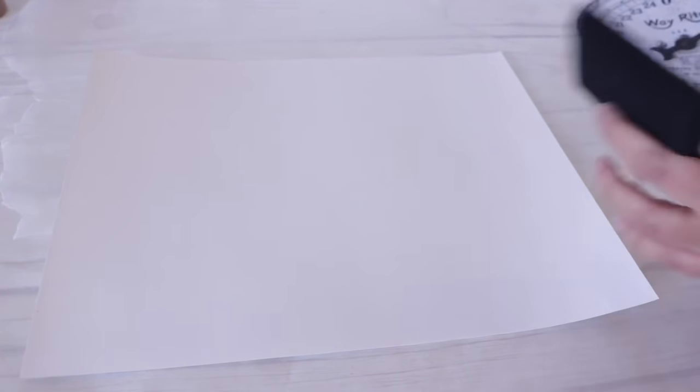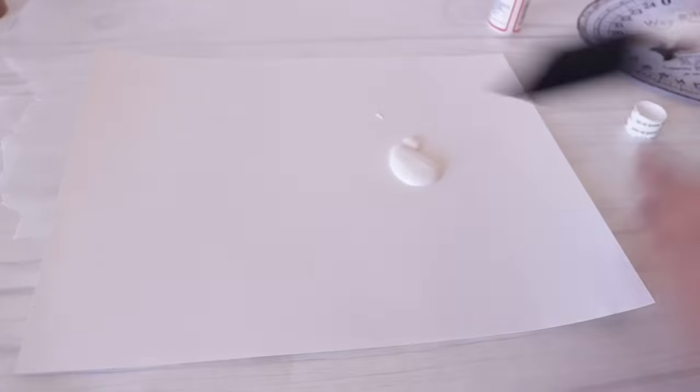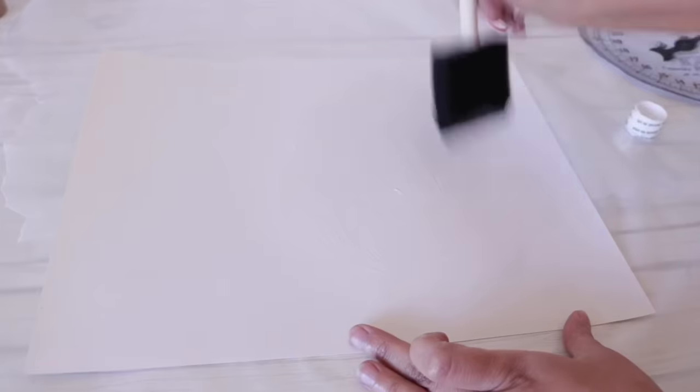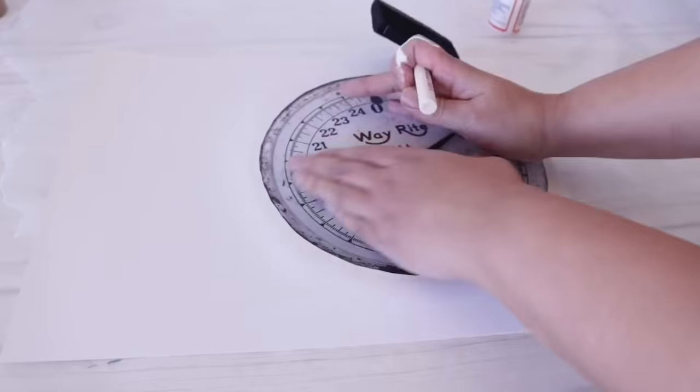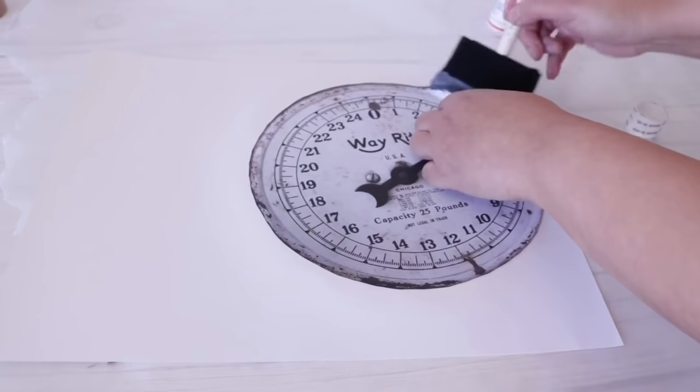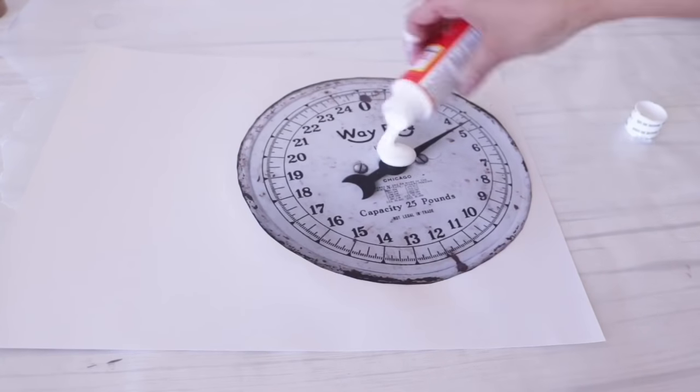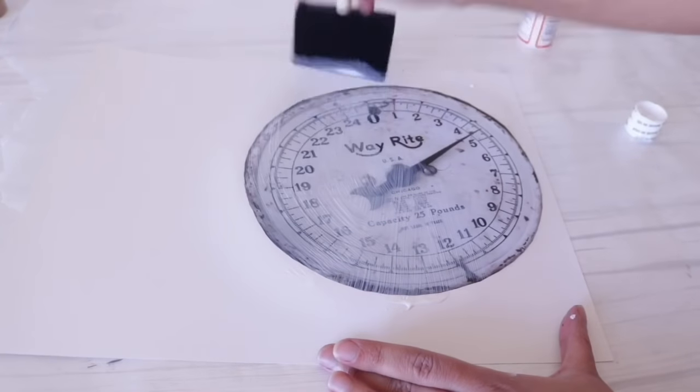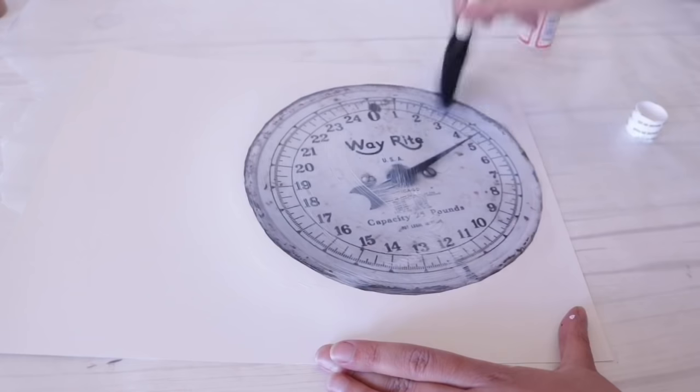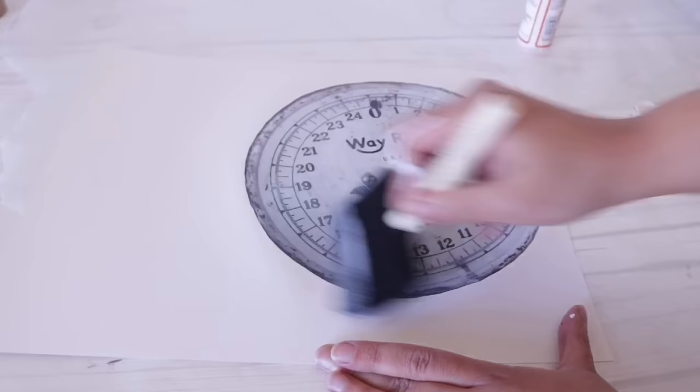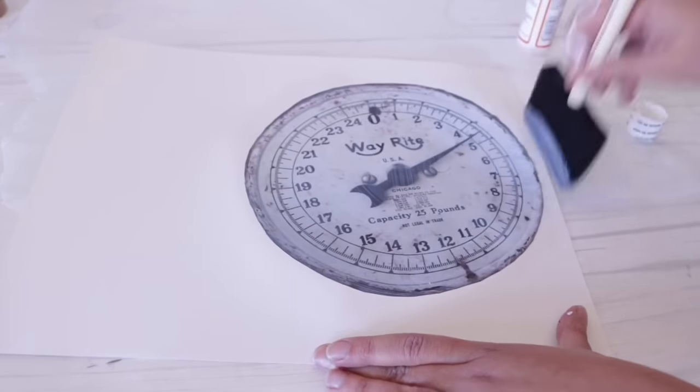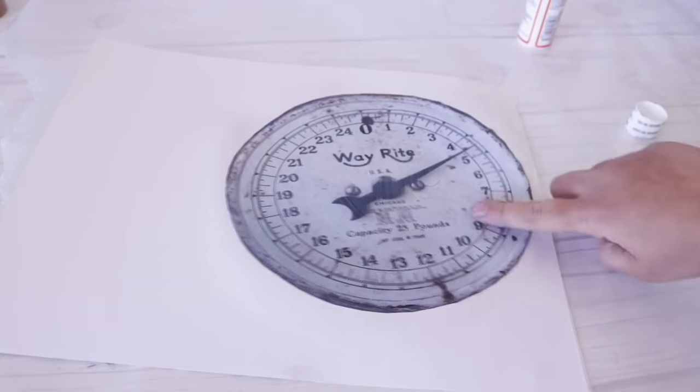I grabbed some Dollar Tree Mod Podge and a foam brush and I spread that evenly on my poster board and then pressed my scale in. I worked my way from the middle out to make sure I get all the air bubbles out and then I added a layer of Mod Podge up top. In my last tutorial, I added some sheet protector on top, but that's up to you if you want to do it that way or not.